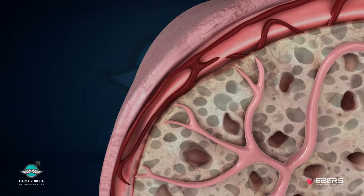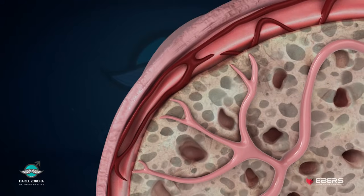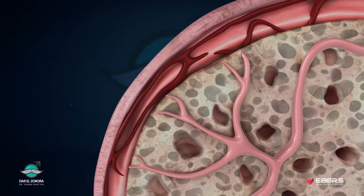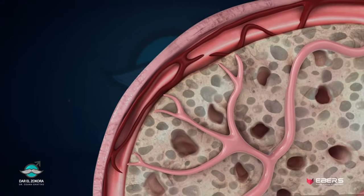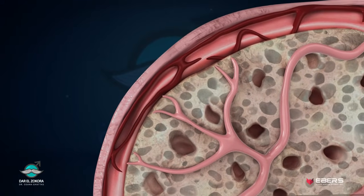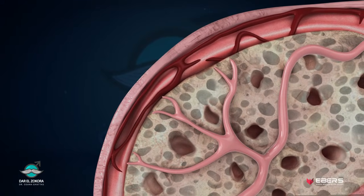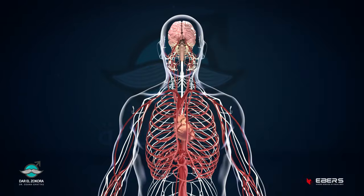During the flaccid state, blood flow to the penis is low and blood input is minimal due to the contraction of trabecular smooth muscle fibers. Erection is a physiological process that usually starts with a sensory and mental stimulation from the brain.